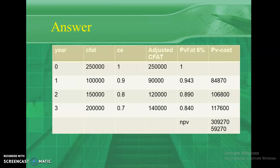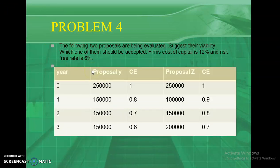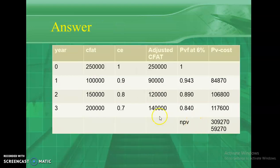Similarly, we calculate the NPV for the second proposal, Proposal Z. The initial cash flow after tax is 2,50,000. Certainty equivalent at year 0 is 1, so 2,50,000 into 1 equals 2,50,000 — this is the PV of cash outflows.